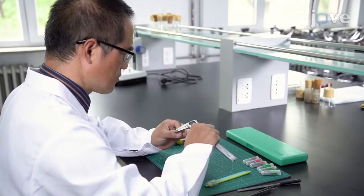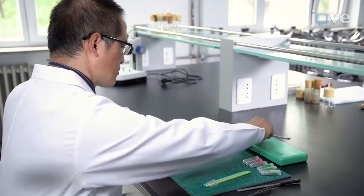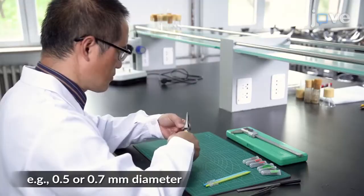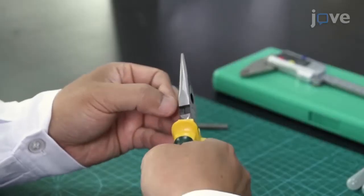To prepare the microdissection needles, select insect pins that match the diameters of the lead refills of ergonomic mechanical pencils, and use a pair of pliers to cut off the wide ends of the pins.